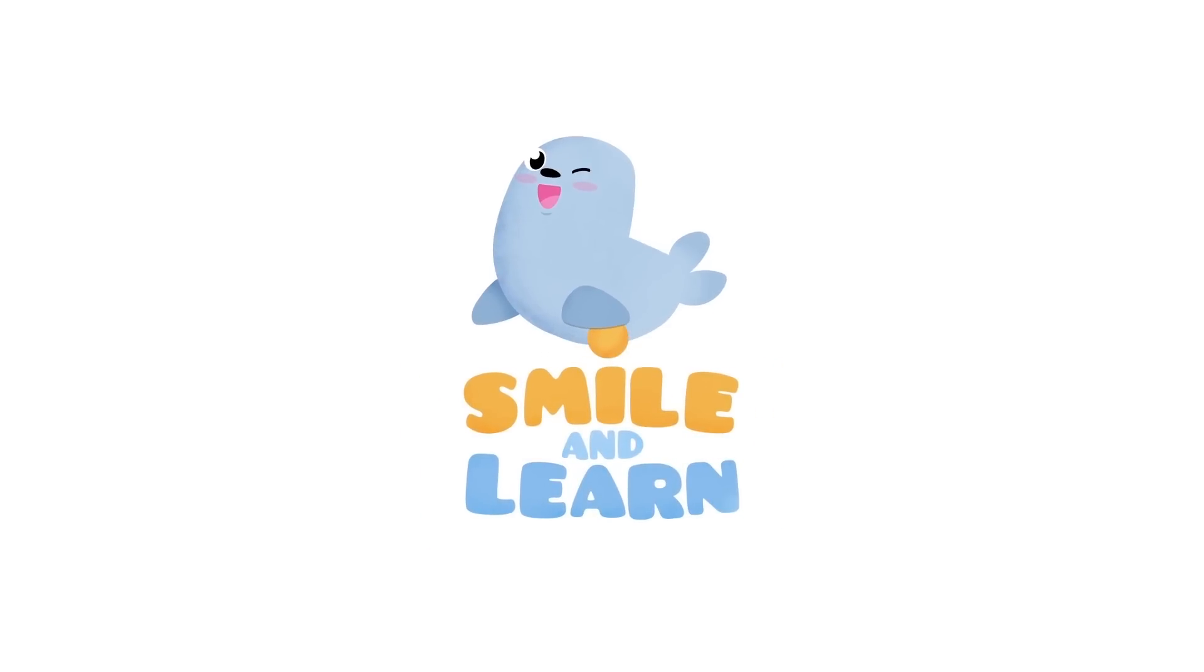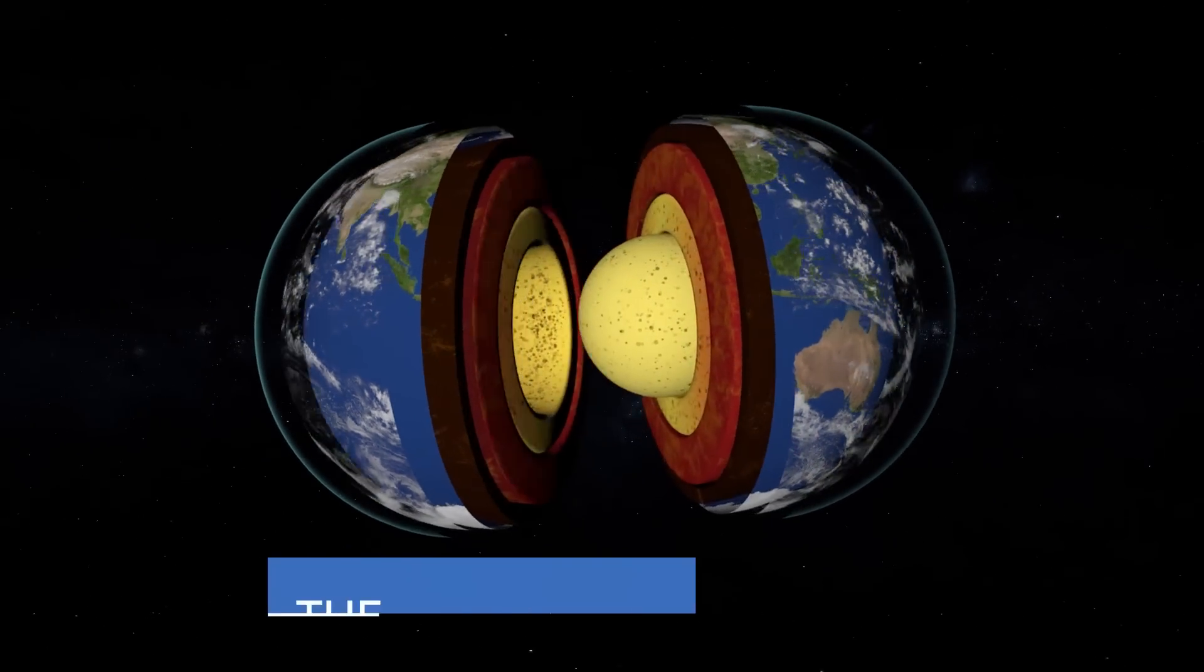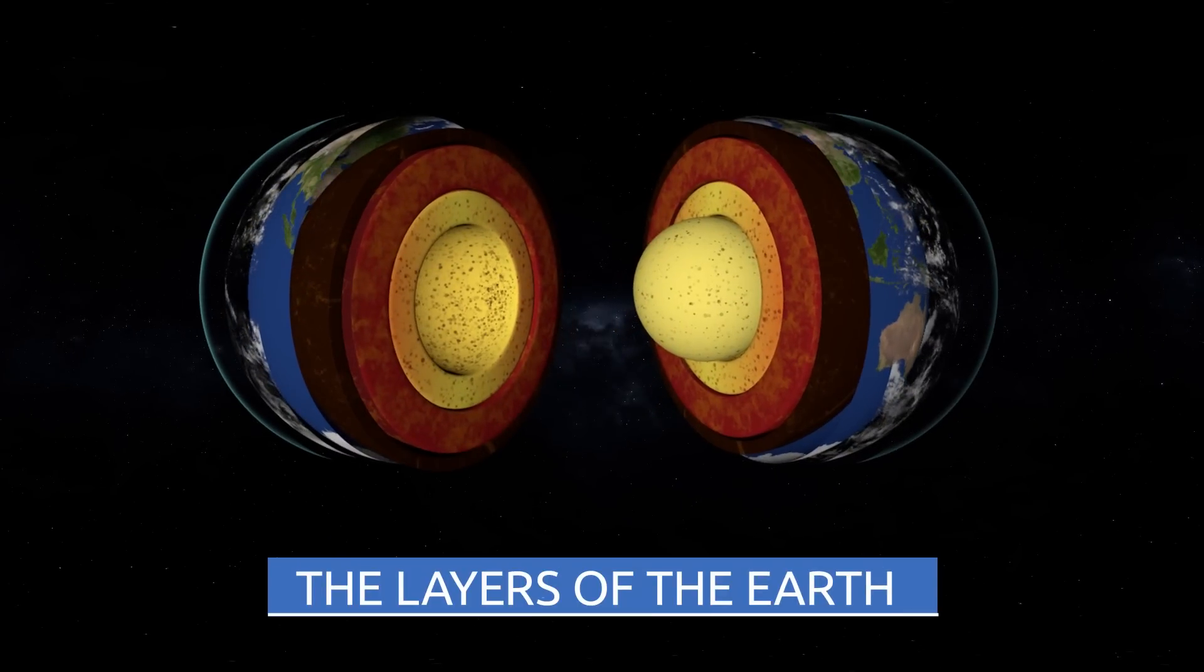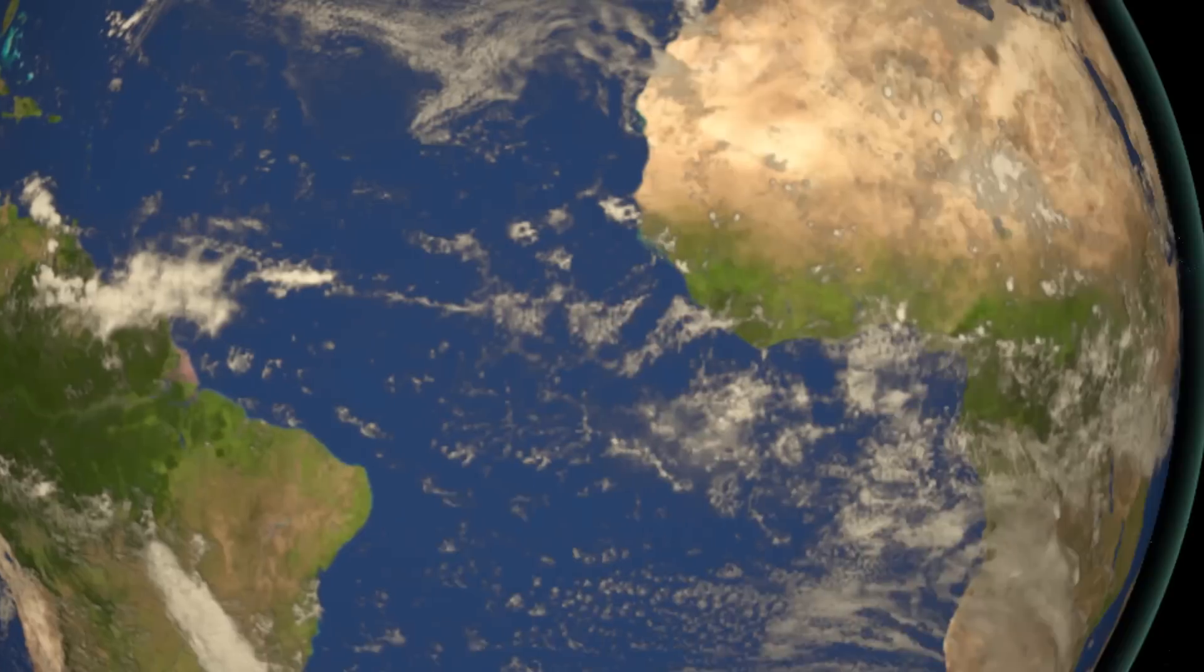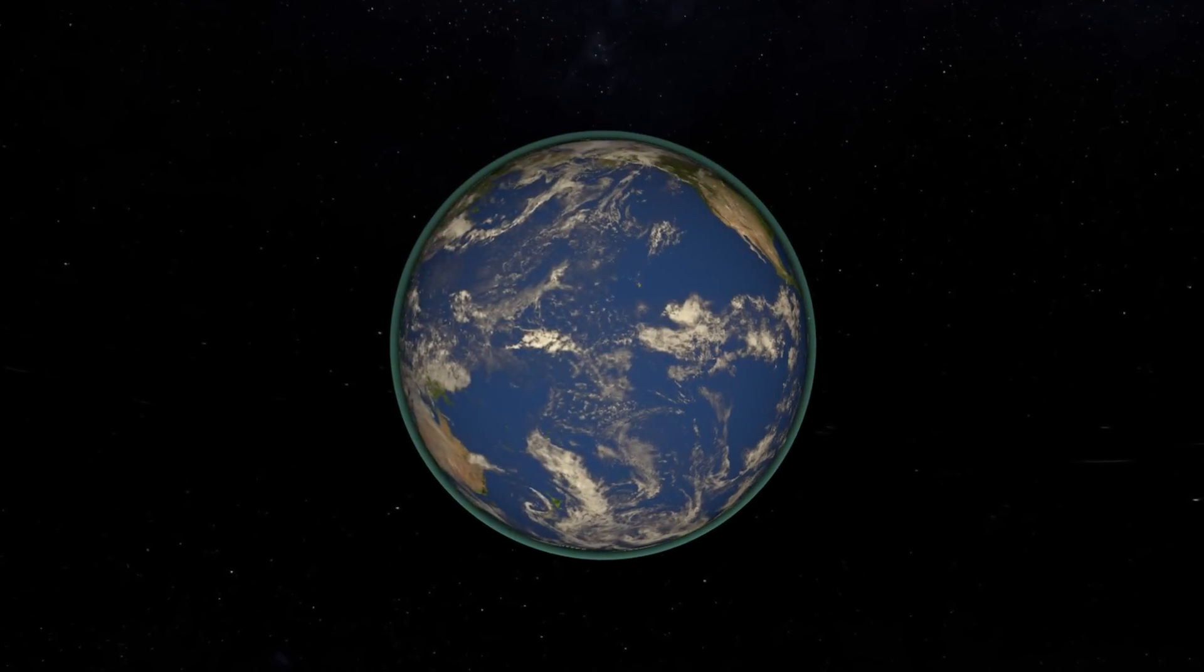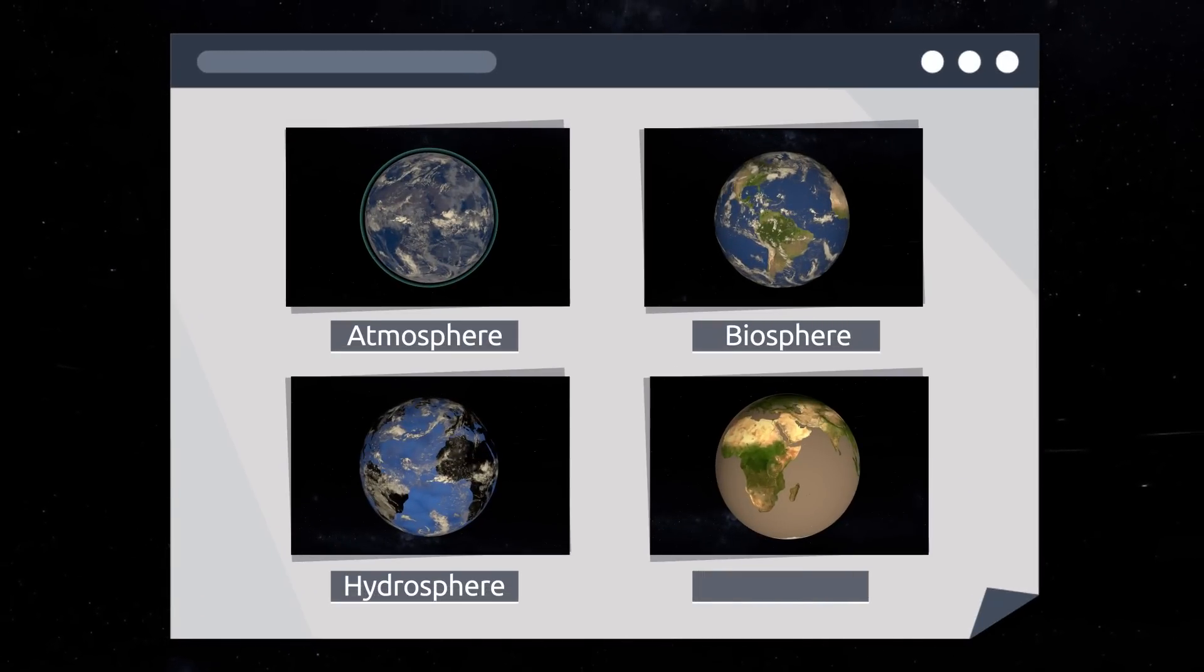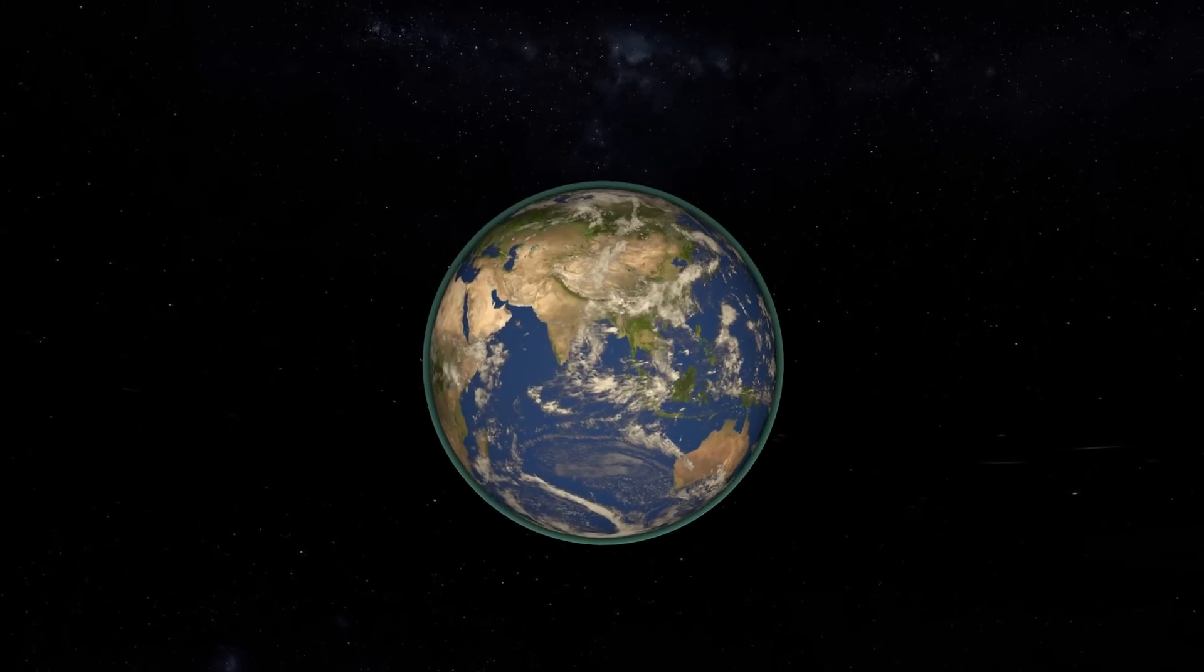Smile and learn. Today we're going to learn about the layers of the Earth. The Earth is formed by four different layers: the atmosphere, the biosphere, the hydrosphere, and the geosphere.